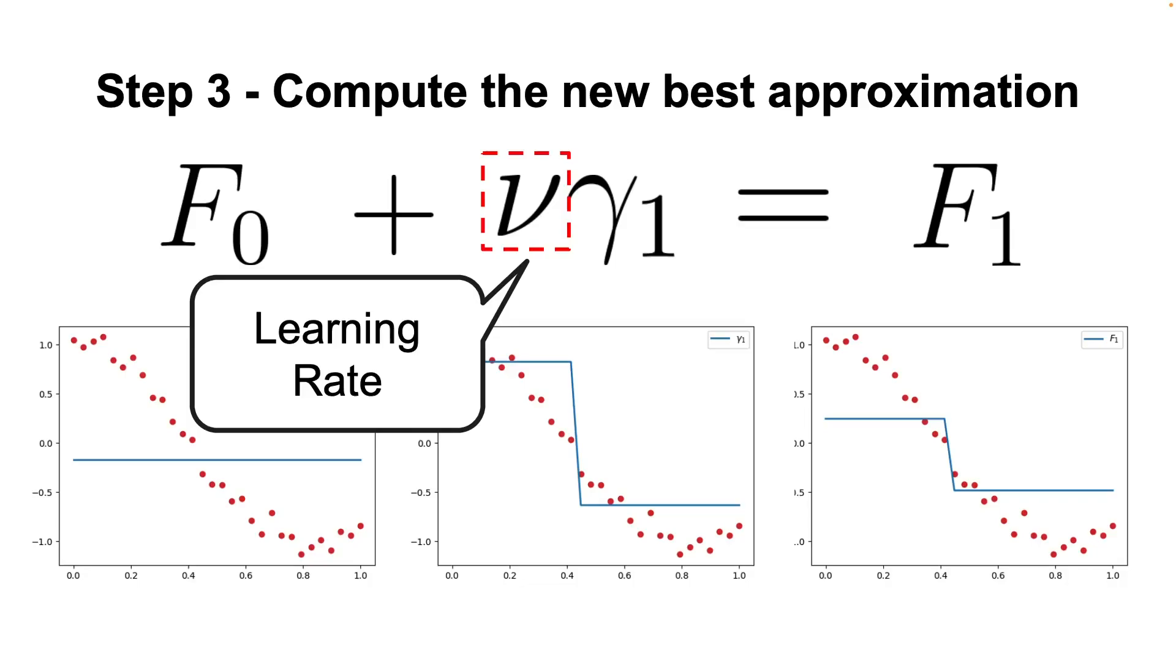Now, all we have to do is add more weak learners by using the last three steps. Let's try to follow these steps one more time, just to see how the prediction changes.